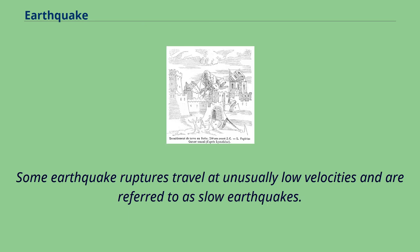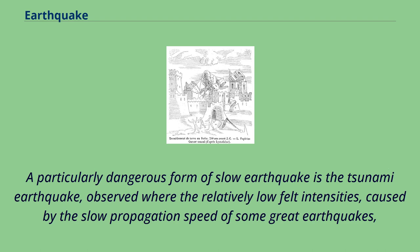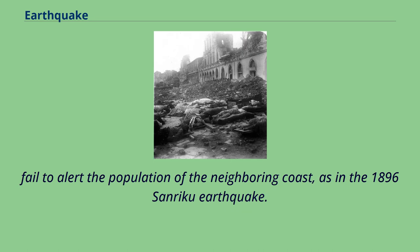Some earthquake ruptures travel at unusually low velocities and are referred to as slow earthquakes. A particularly dangerous form is the tsunami earthquake, where the relatively low felt intensities caused by the slow propagation speed of some great earthquakes fail to alert the population of the neighboring coast, as in the 1896 Sanriku earthquake.